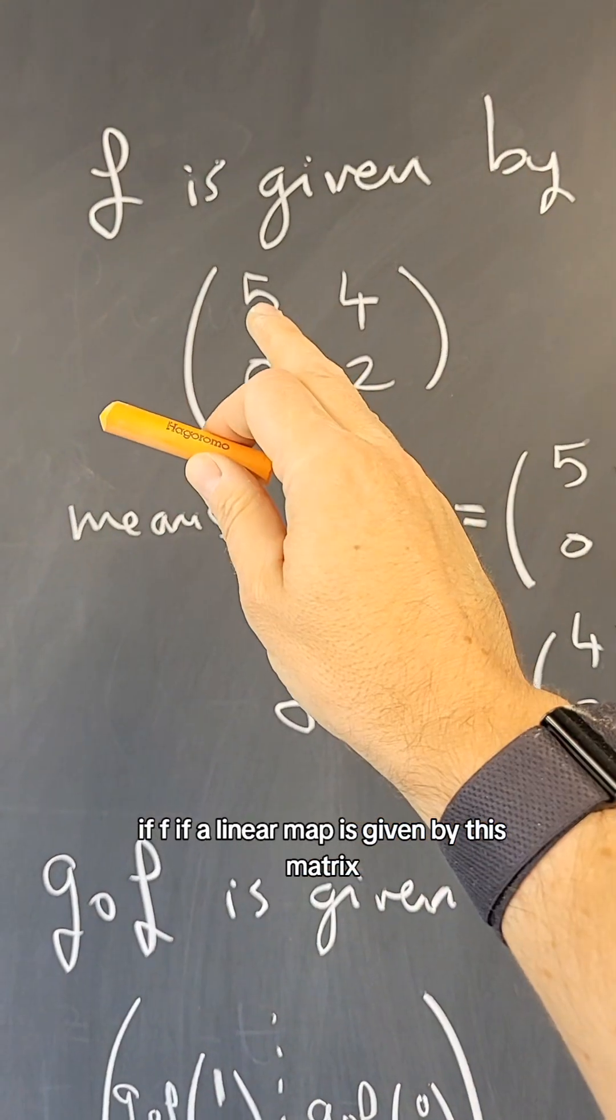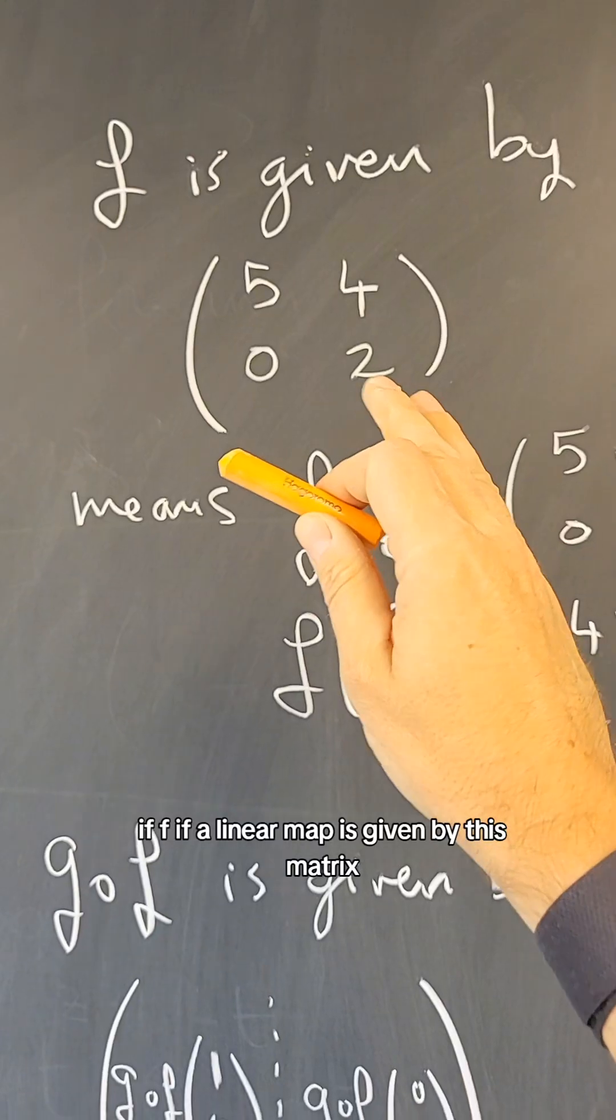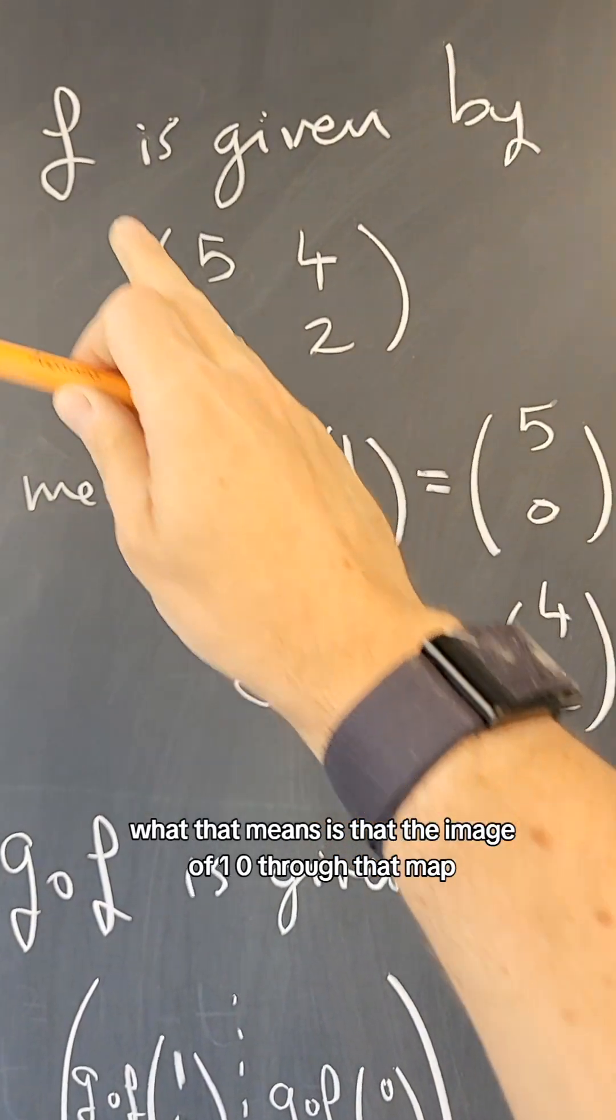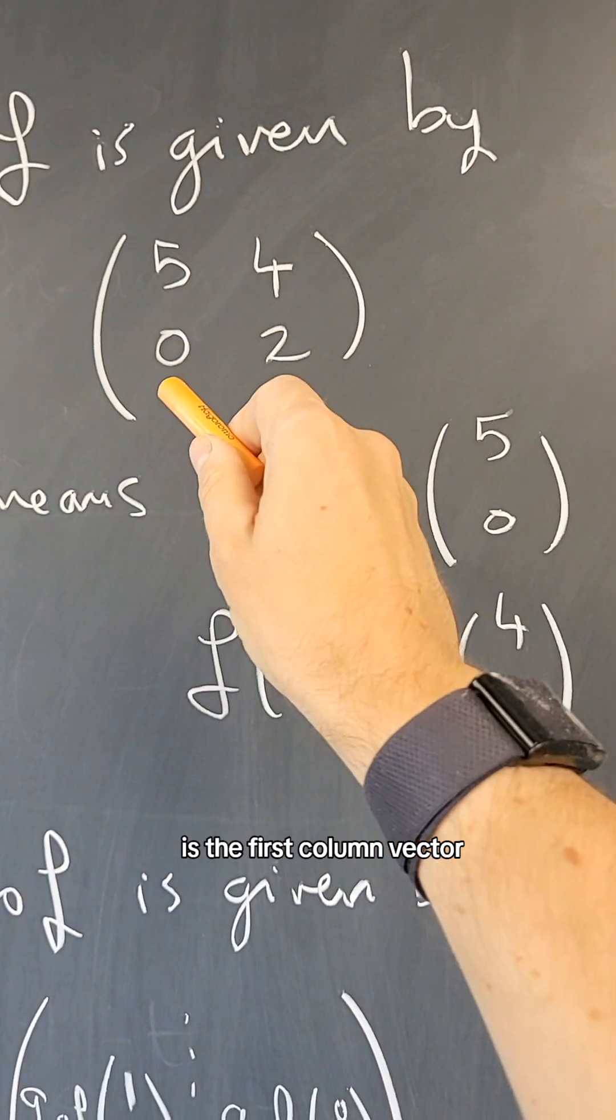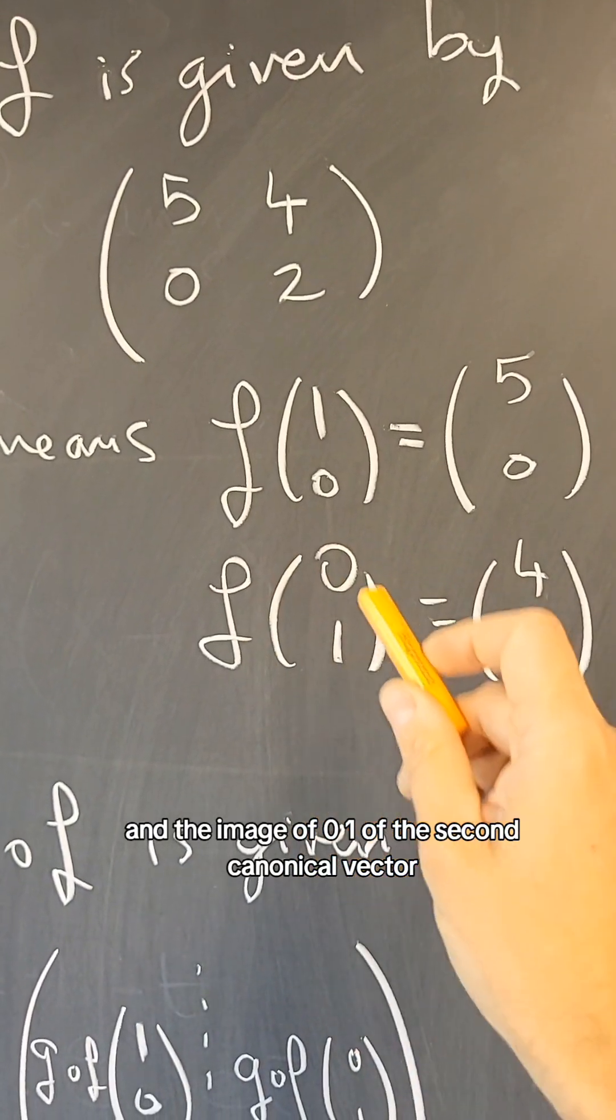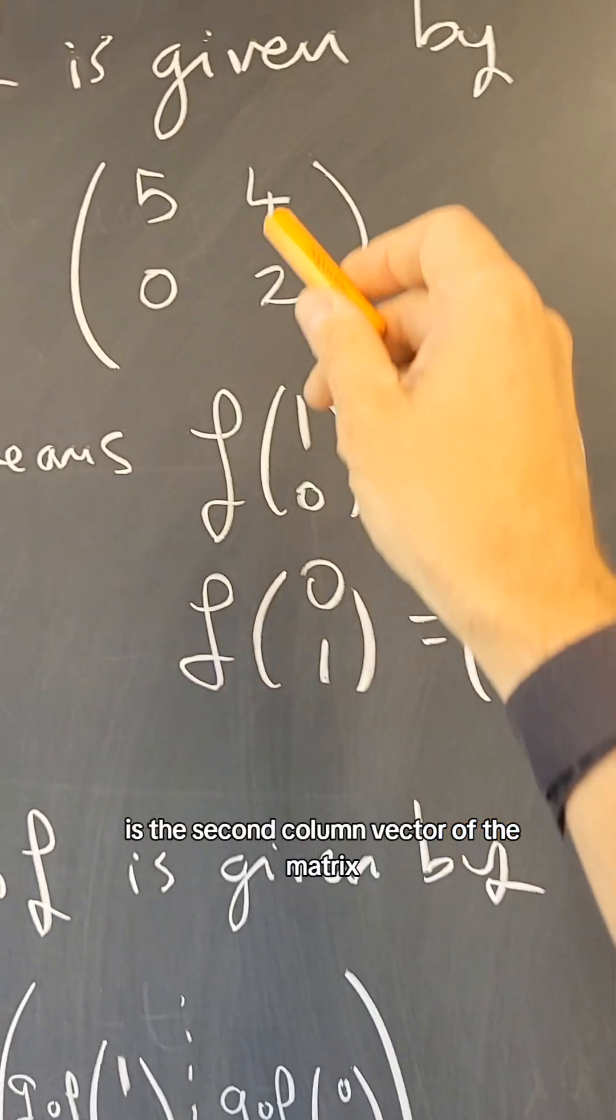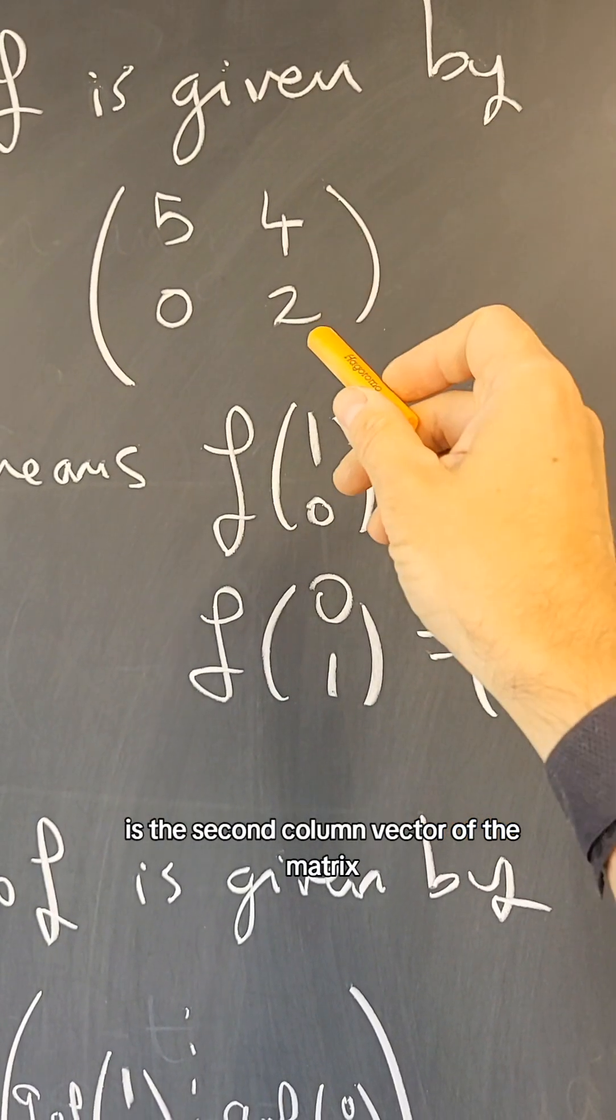Well, if a linear map is given by this matrix, what that means is that the image of (1, 0) through that map is the first column vector, and the image of (0, 1) of the second canonical vector is the second column vector of the matrix.